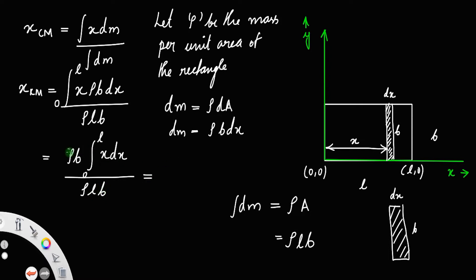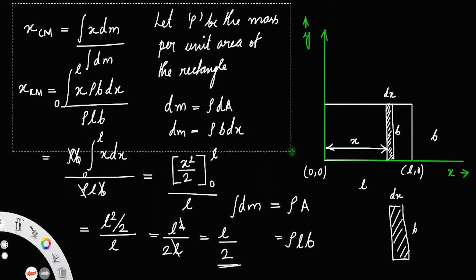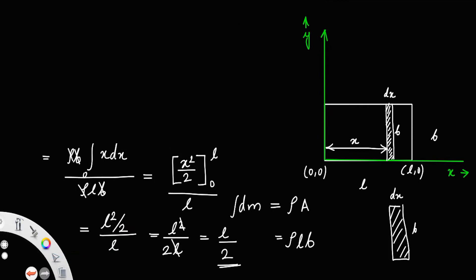We can cancel ρ with ρ and b with b. Then the integral of x dx equals x²/2; putting the lower limit 0 and upper limit l, and with l remaining in the denominator, this equals l²/2 divided by l, or l²/2l. Cancelling one l gives l/2. So x_cm, the x coordinate of center of mass, equals l/2.